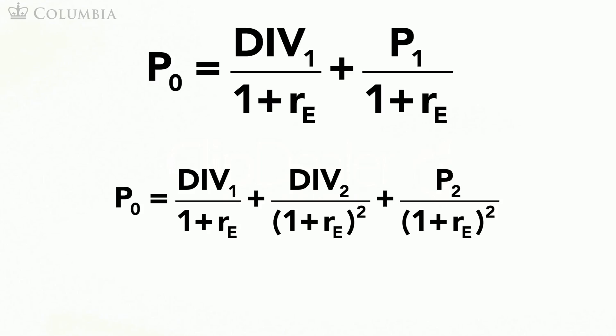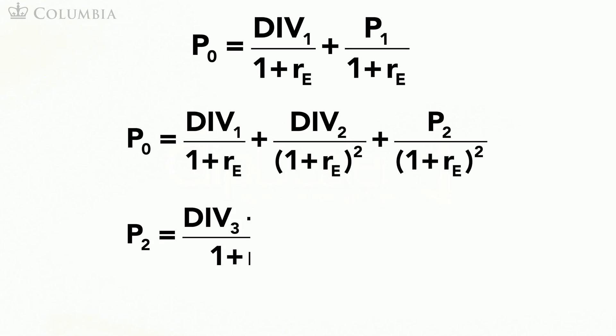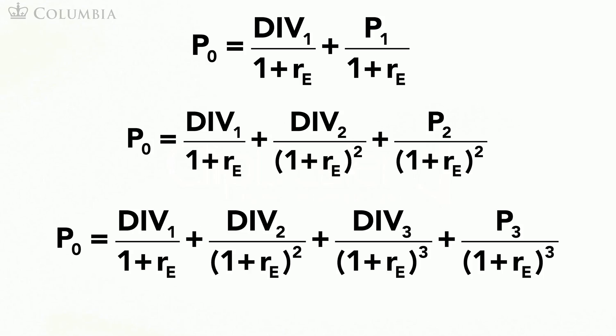So we do a similar trick and express P₂ as the present value of the dividend in year 3 plus the price in year 3, and replace it in the expression for P₀ to obtain the following. I hope you can start to see a pattern here.